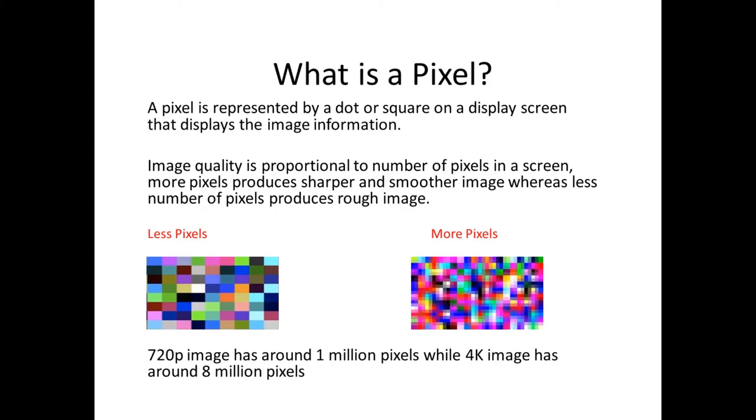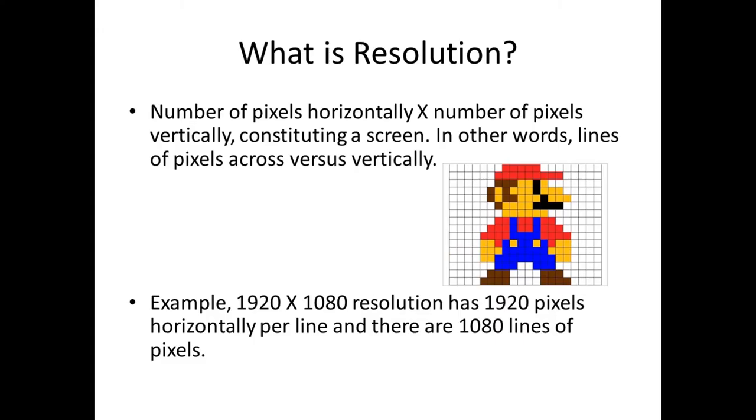And you can see a small comparison where less number of pixels are shown by the image on the left side and more number of pixels are shown by the image on the right side. If you compare a 720p image with a 4K image, the 720p image has around 1 million pixels, that sounds a lot but is really less as compared with the 4K image that has around 8 million pixels.